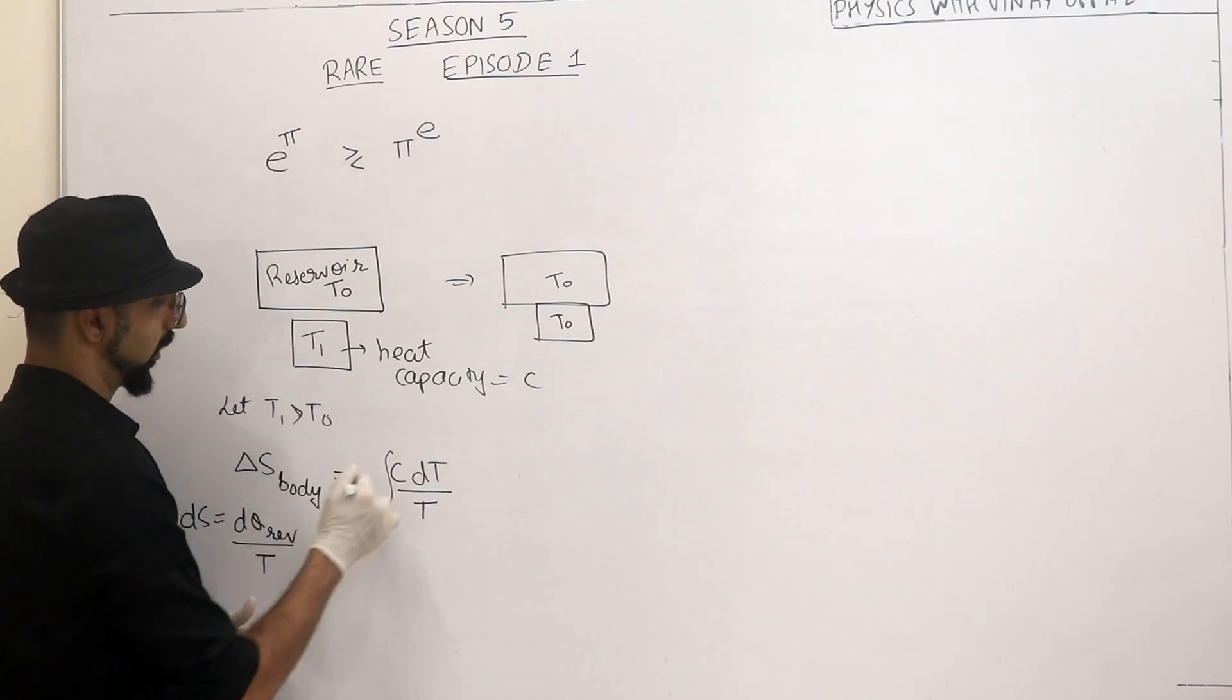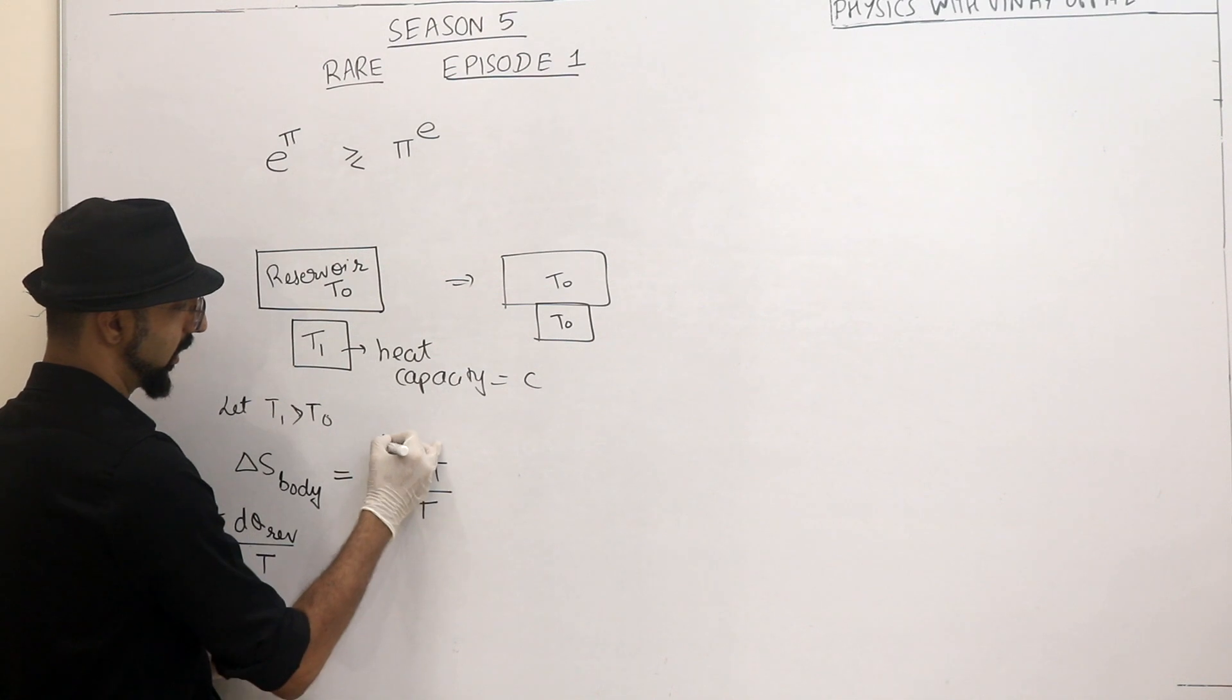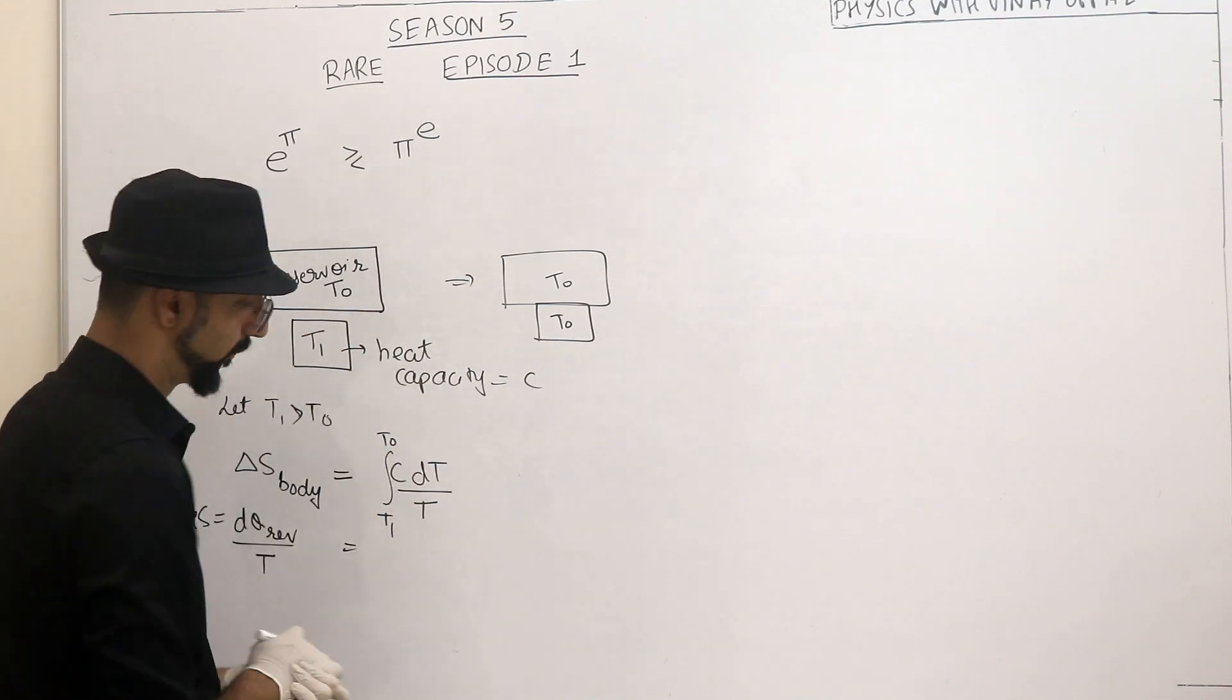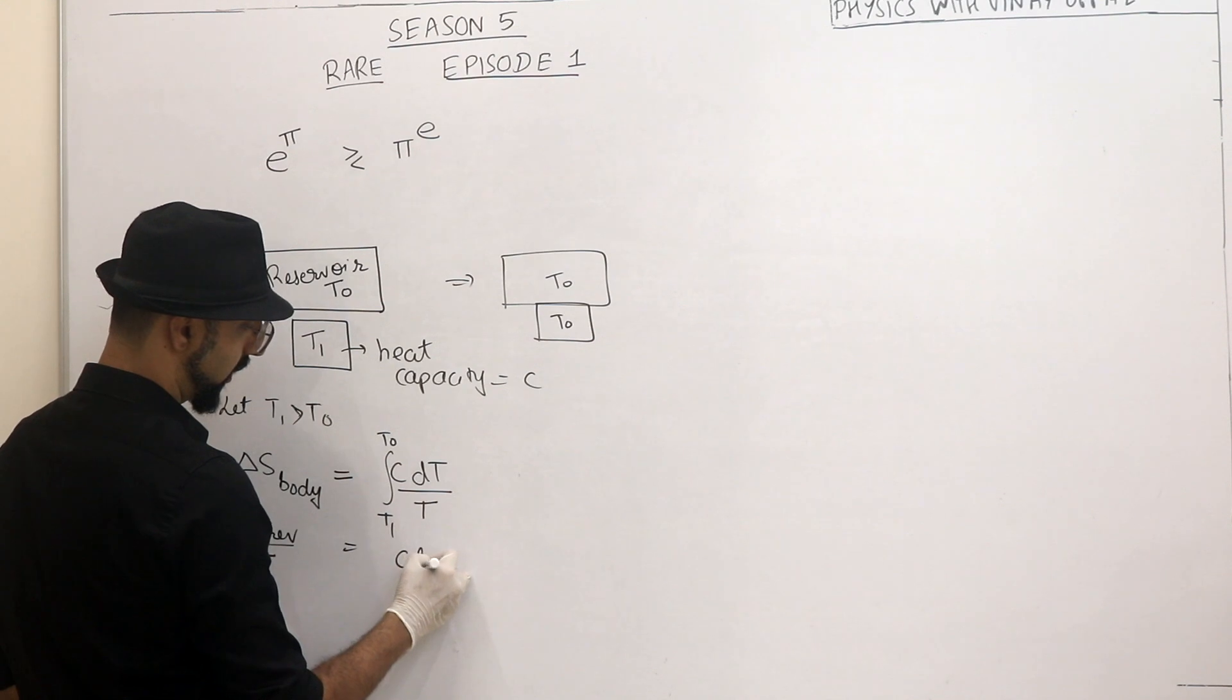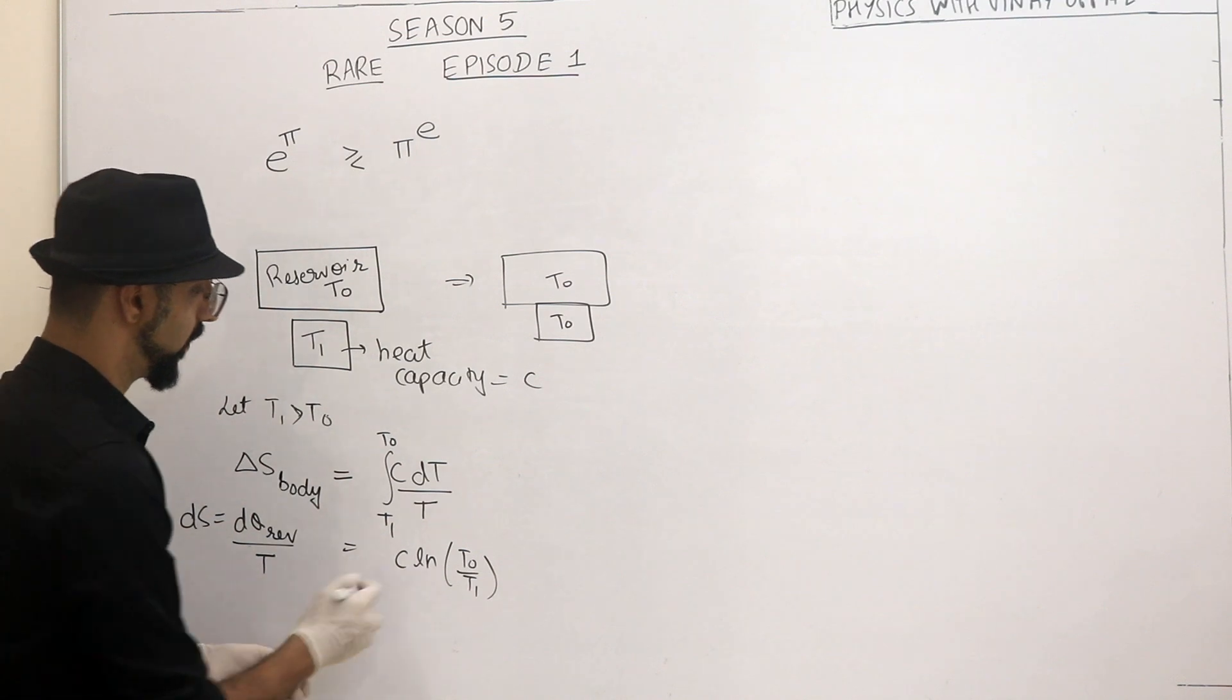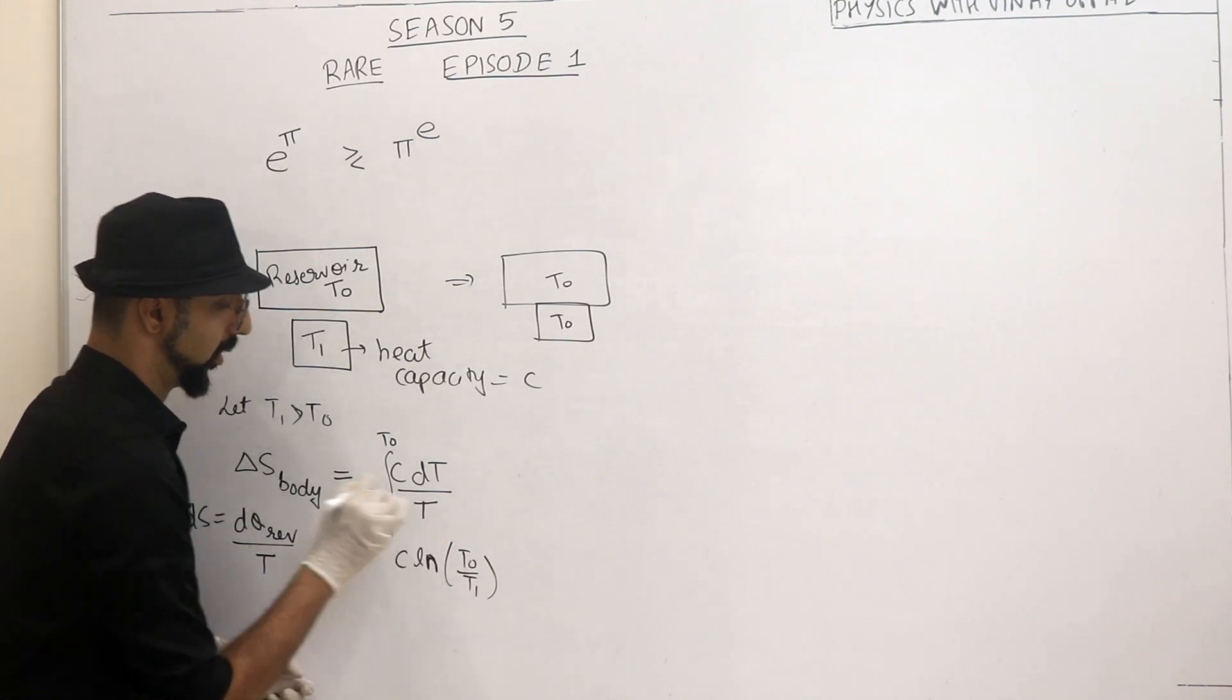And then I integrate it. How much temperature is going to be? T1 to T0. If temperature is coming down, it doesn't matter. Because dt is the change in the temperature. So how much will it be? C dt divided by T gives Ln. So this will be the change in entropy of my body.